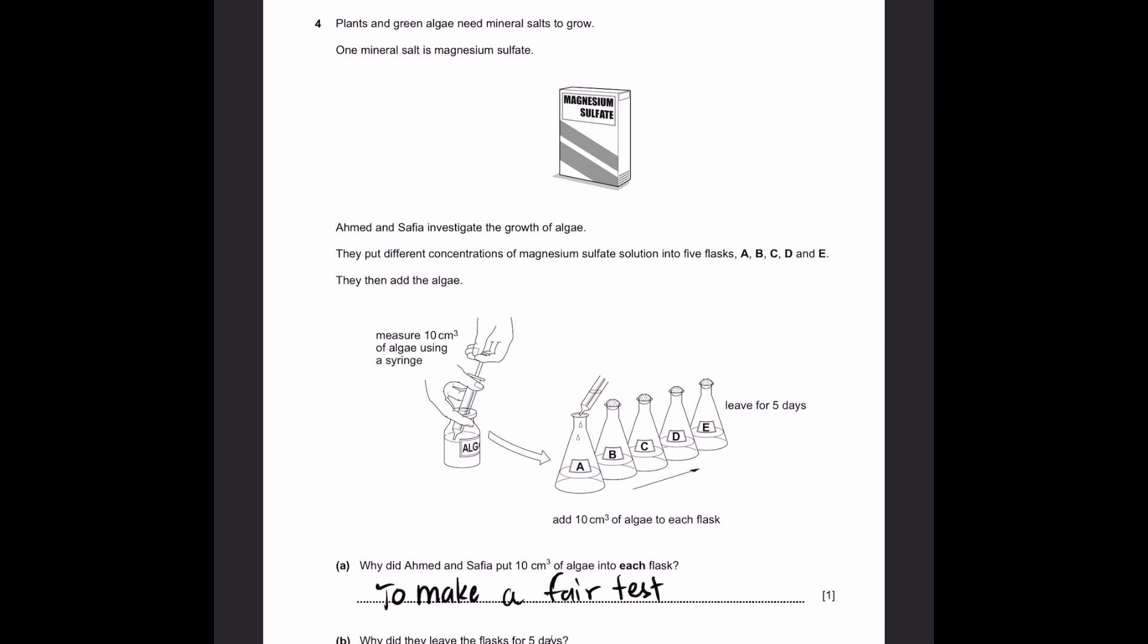Question 4. Plants and green algae need mineral salts to grow. One mineral salt is magnesium sulfate. Ahmed and Safiya investigate the growth of algae. They put different concentrations of magnesium sulfate solution into five flasks A, B, C, D, and E, then add the algae.